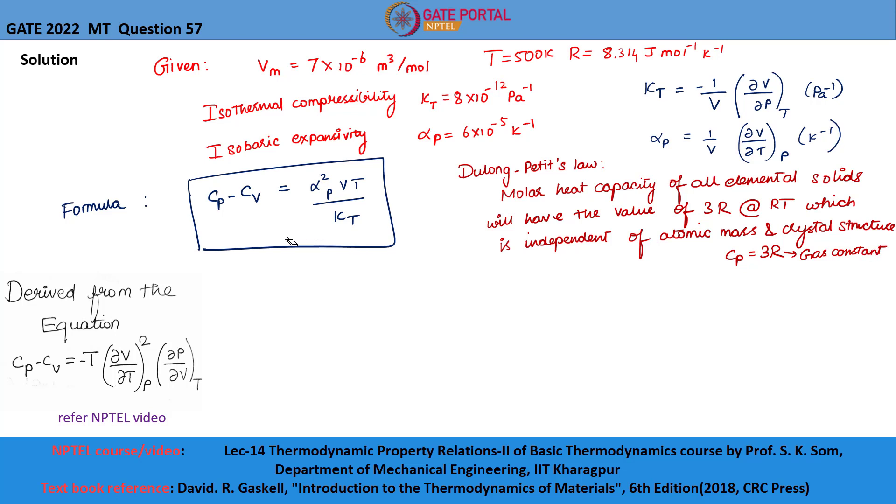So, let us substitute the given values in this equation. Cp minus Cv equals 6 into 10 power minus 5 the whole squared, multiplied by 7 into 10 power minus 6, multiplied by 500, divided by 8 into 10 power minus 12, which is equal to 36 multiplied by 35 divided by 8 into 10 power minus 2. So, on solving, we will be getting Cp minus Cv equals 1.575.